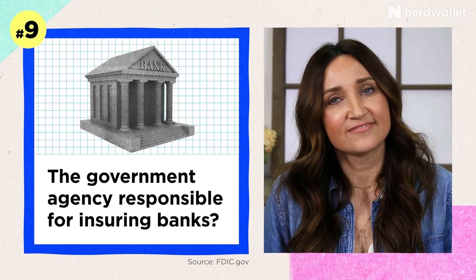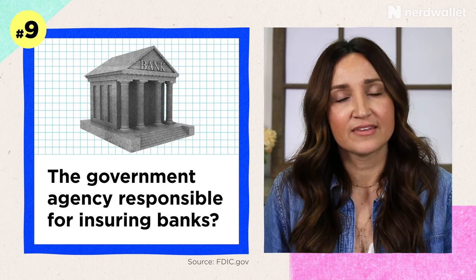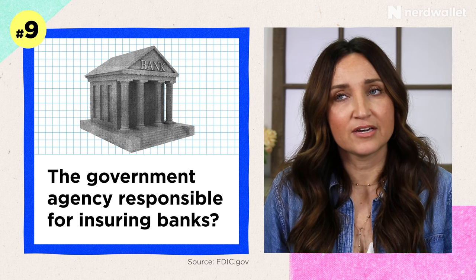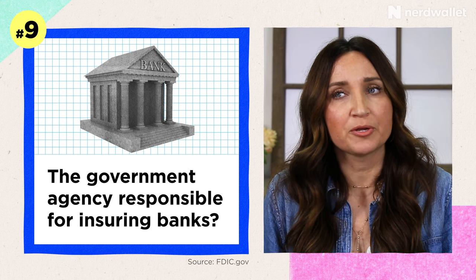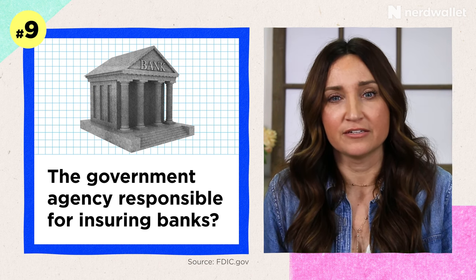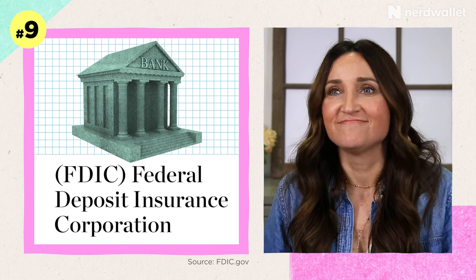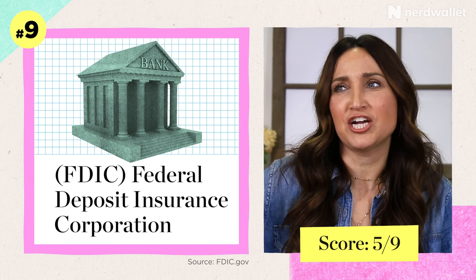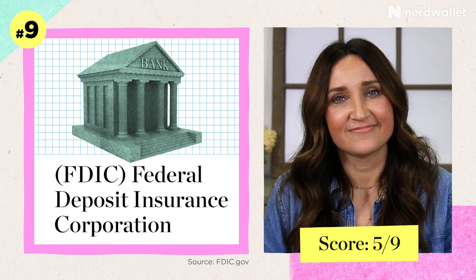Question number nine: what is the name or acronym of the government agency responsible for insuring banks? The acronym for the company — for insuring banks? It's FDIC! Yes — the FDIC. They insure deposits. I had to think about that one because it always says on the commercials, like FDIC insured. Five so far.